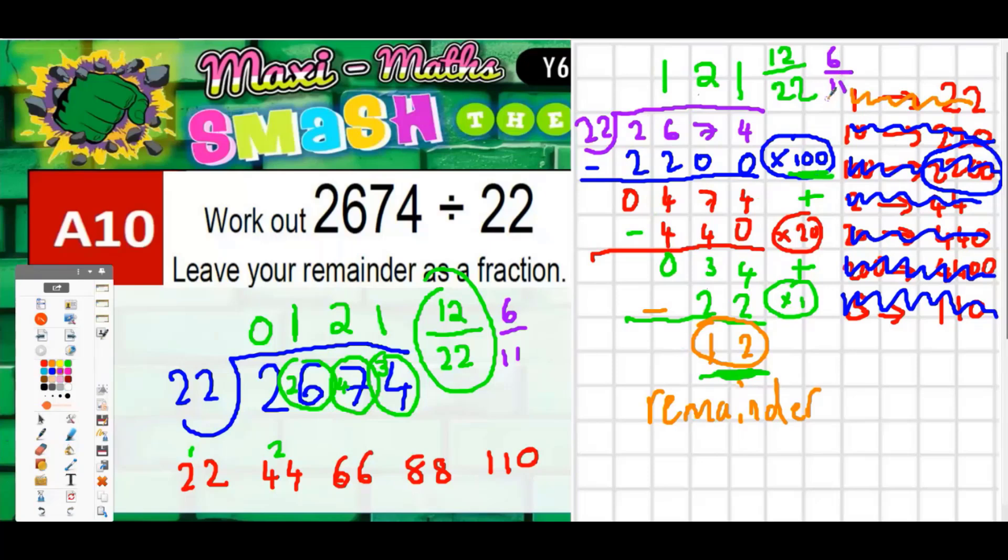Either way you get the same answer. As I say, this method that we did here was quicker but that could get difficult if the numbers that the examiners had chosen were a bit more difficult. And then the chunky method would probably be the more efficient way then.